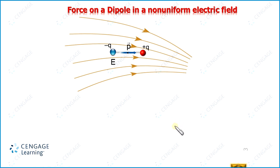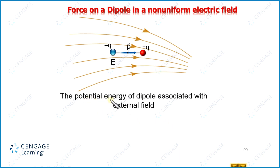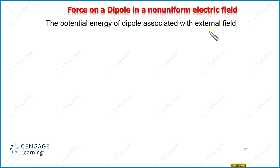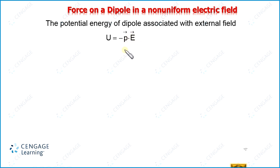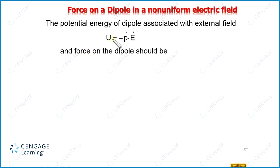Now let us calculate this force. To calculate this force we need to calculate the potential energy associated with the external field. We have the expression for the potential energy of a dipole placed in an external electric field: U = −p·E. Here p is the dipole moment and E is the external electric field at the center of the dipole. Since potential energy is associated with a conservative field, the force acting on the dipole can be calculated by taking the gradient of the electric potential energy. So the force on the dipole equals the negative gradient of the potential energy.